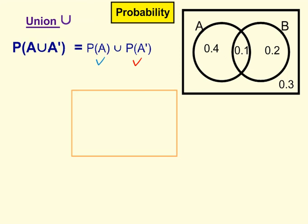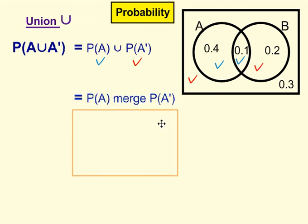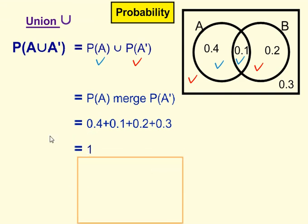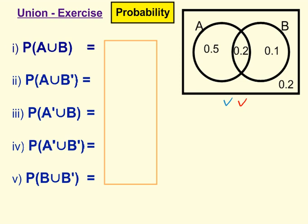Fifth example: probability of A union with probability of not A. Break it apart, tick everywhere that contains A, and tick everywhere that contains not A. Now we add up everywhere that has a tick, and we're going to find that it comes to 1 — and you might expect that, probability of A union with probability of not A. Here are some exercises for you to do. Have a go, pause the video, and I'll show you the answers in a moment. Okay, here are the answers.